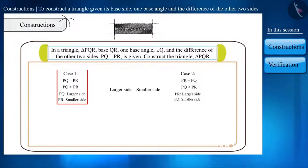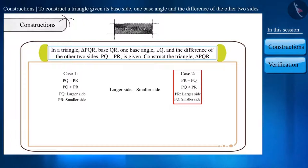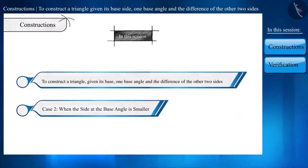Case 1, when the side formed from the base angle is larger than the other side. And case 2, when the side formed from the base angle is smaller than the other side. And in the previous video, we understood the construction according to case 1. In this session, we will understand the construction of a triangle according to case 2.